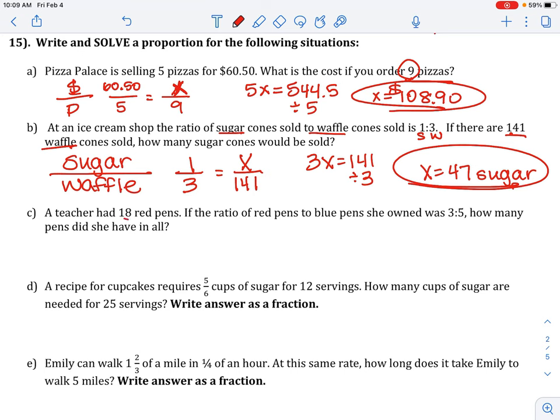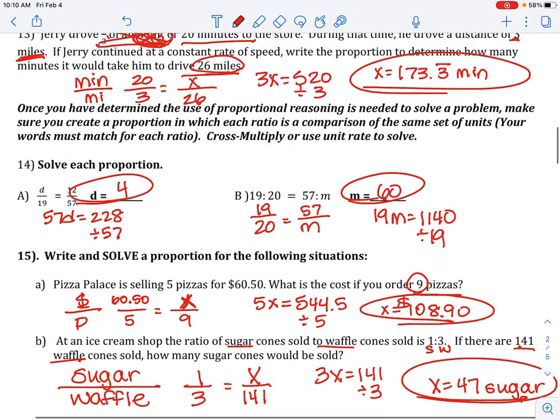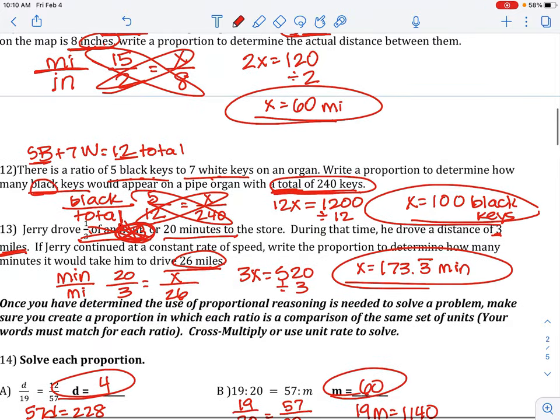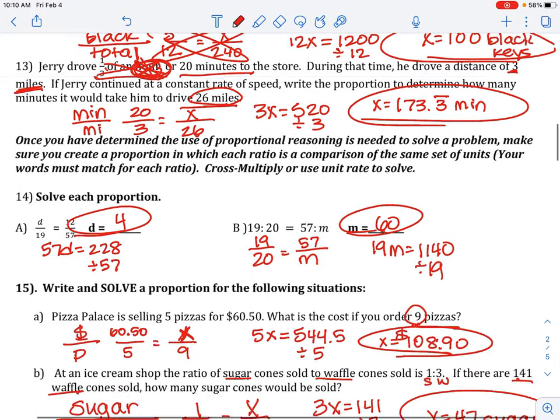C, a teacher had 18 red pens. If the ratio of red to blue was 3 to 5, how many pens did she have in all? Okay. This is one of those that when you say total or in all, you have to do some adding, kind of like we did on number 12.